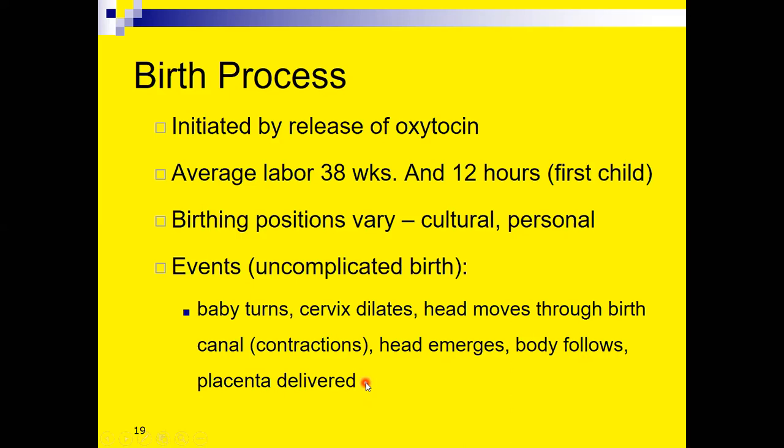Common birth complications include fetal distress caused by anoxia — a lack of oxygen — which may occur when the umbilical cord wraps around the neck during birth. Fortunately, fetal monitors can detect this today, and doctors can take quick steps to alleviate the problem. Another fairly common complication is a breech birth, when the baby is not oriented properly and may be feet-first, making delivery very difficult.